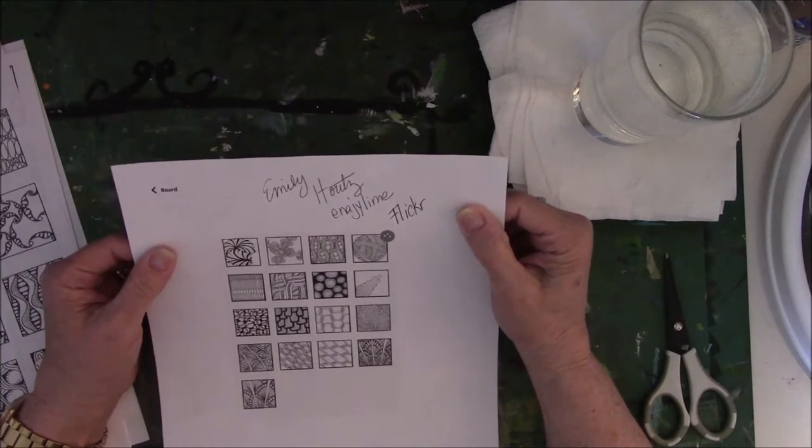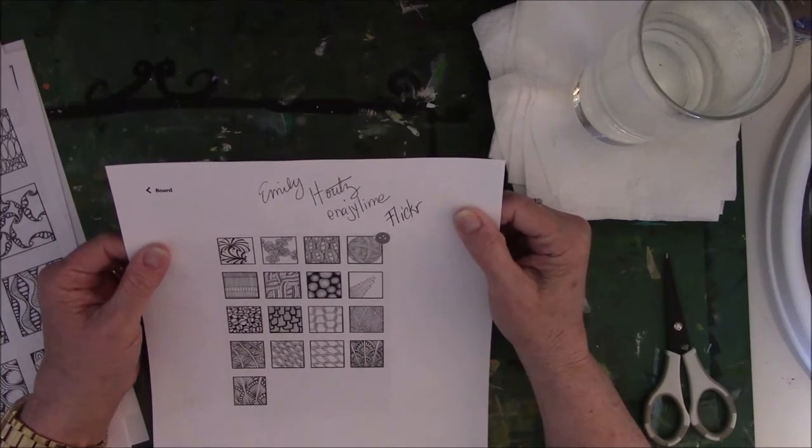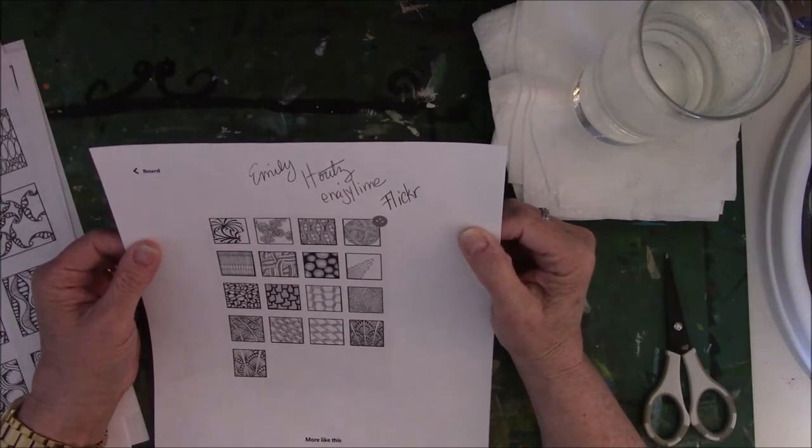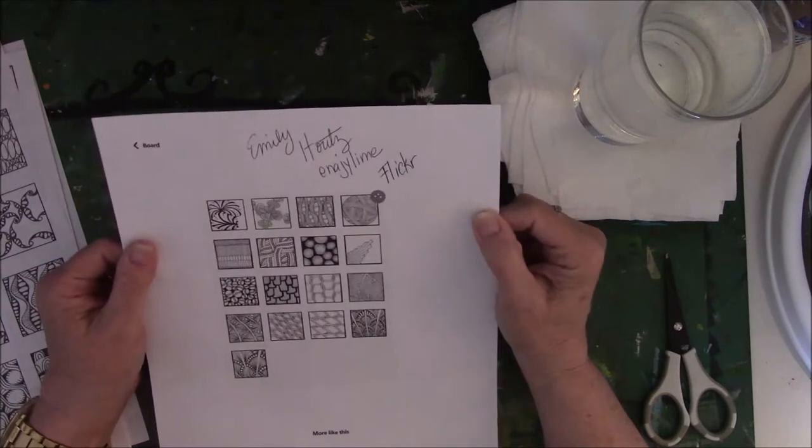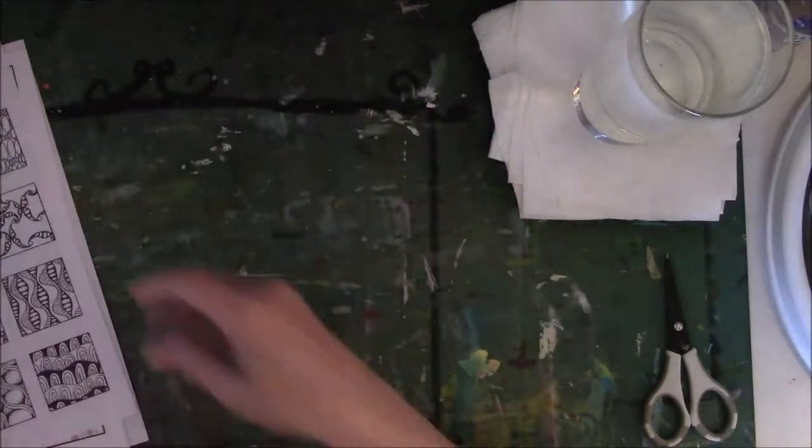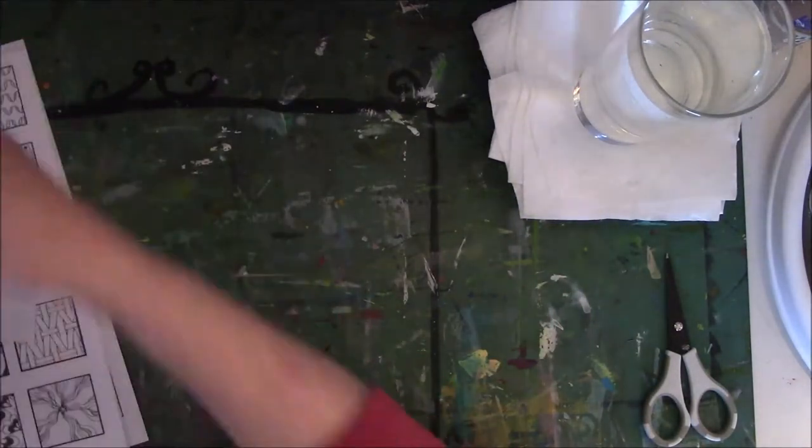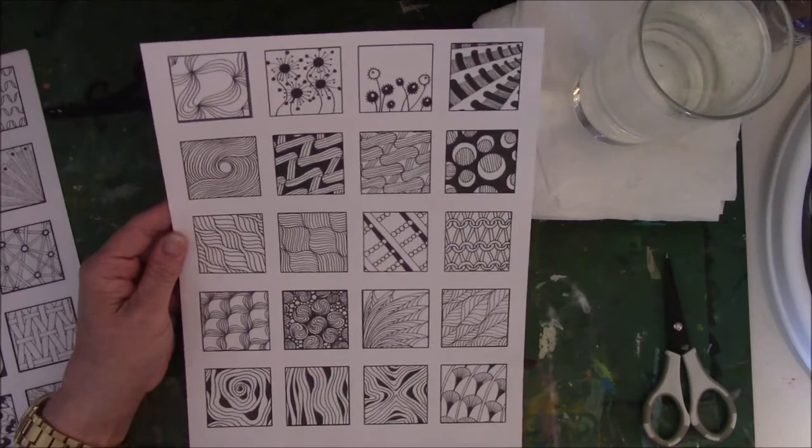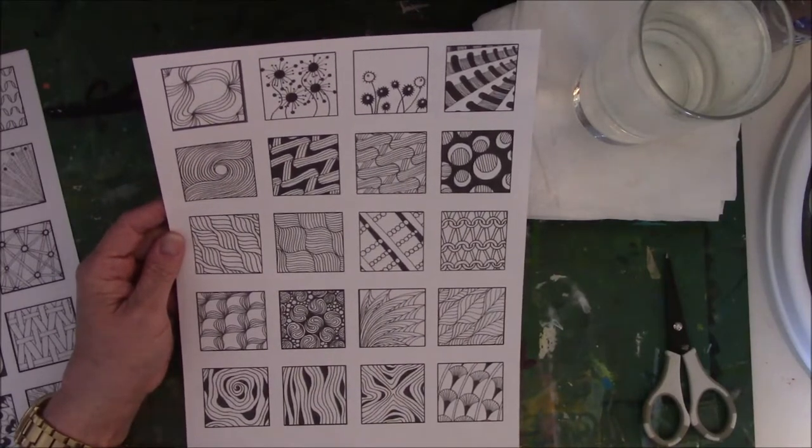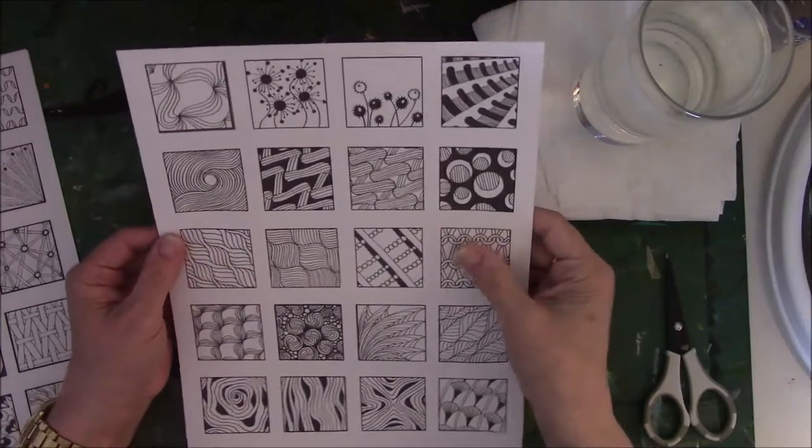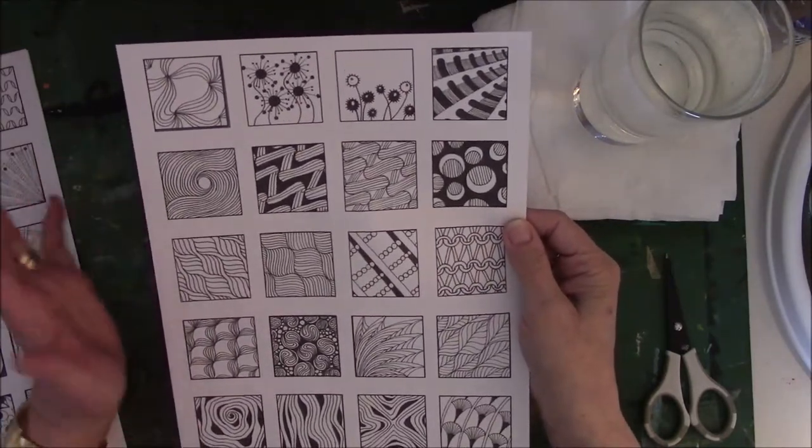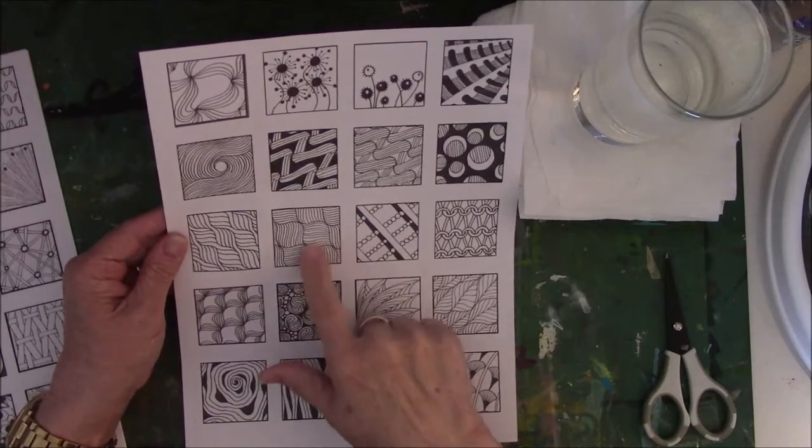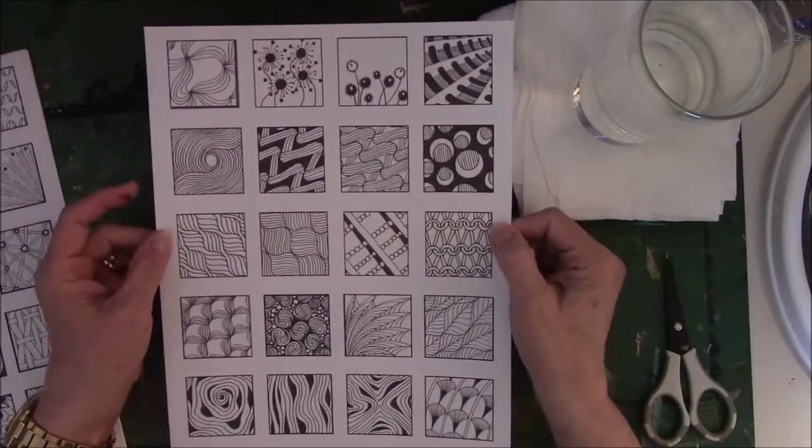I accidentally stumbled onto this woman named Emily Houts. She is E-N-A-J-Y Lime on Flickr. I found her via Pinterest, and on her Flickr account she has all these great sheets that are free to download and print on your computer of different kinds of doodle patterns. The downside is there are no step-outs to show you how she got this way, and there are no names attached to any of these sheets.